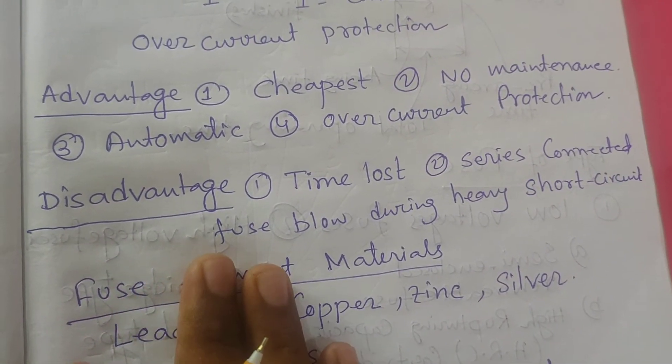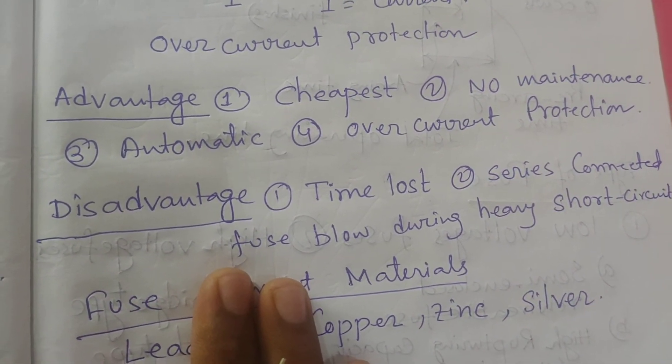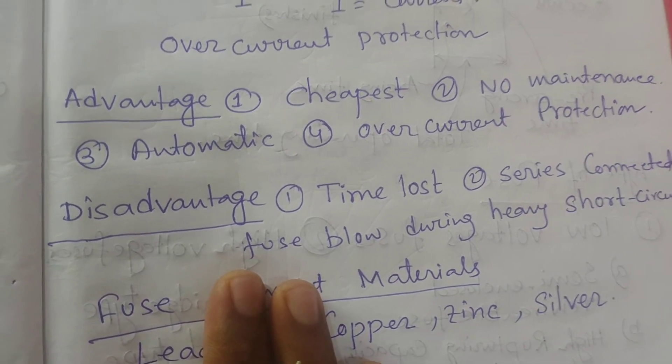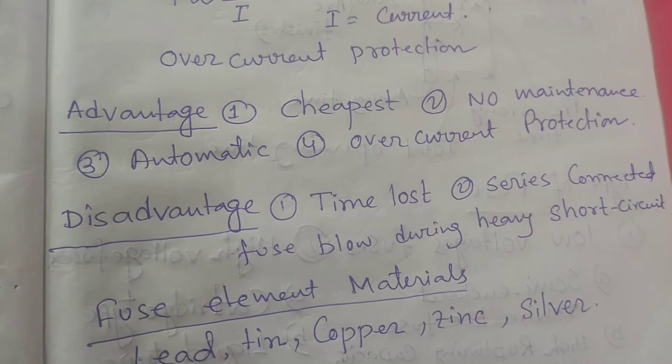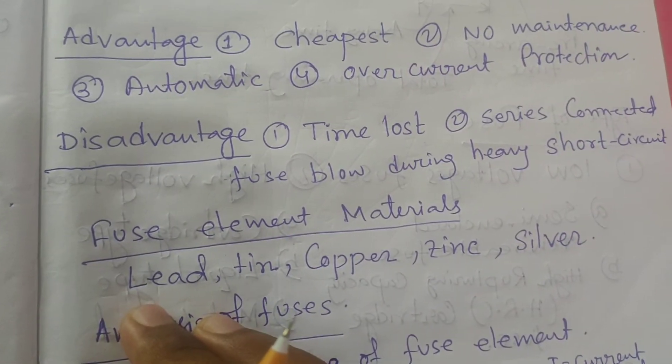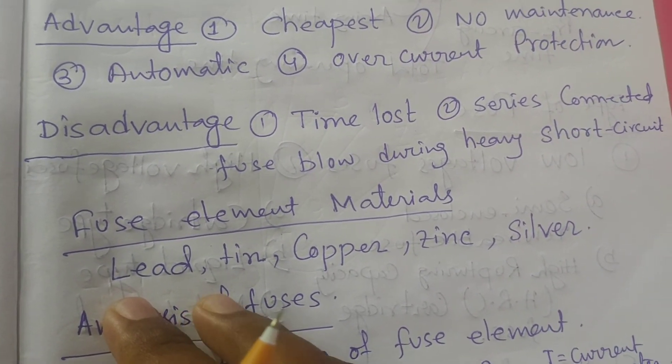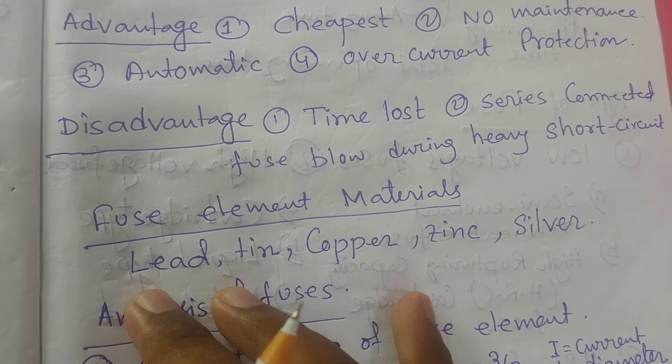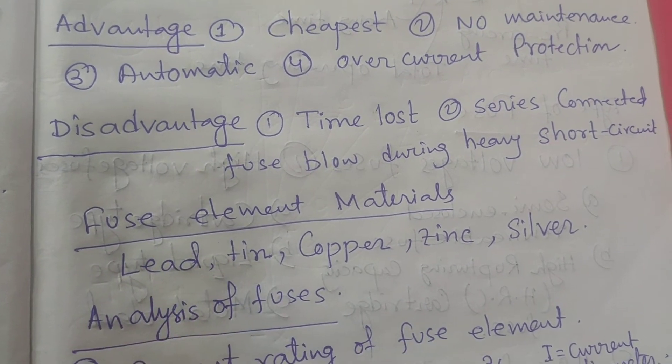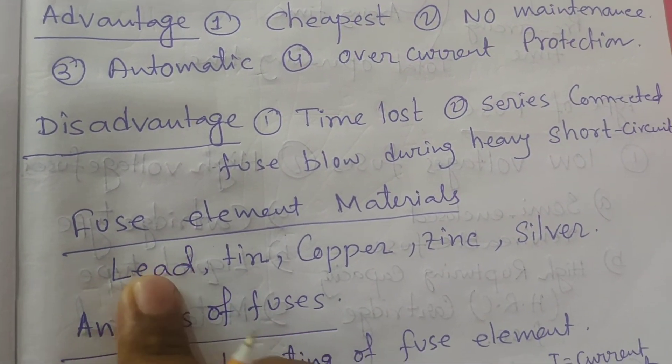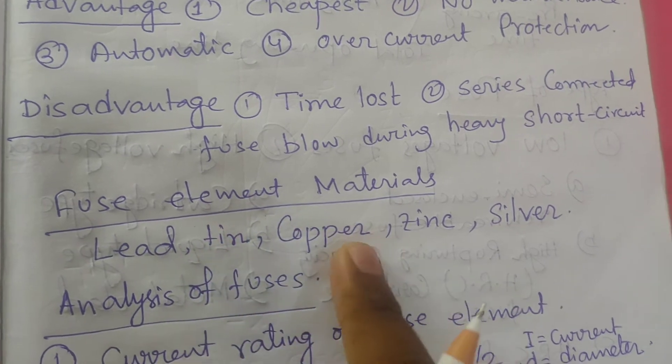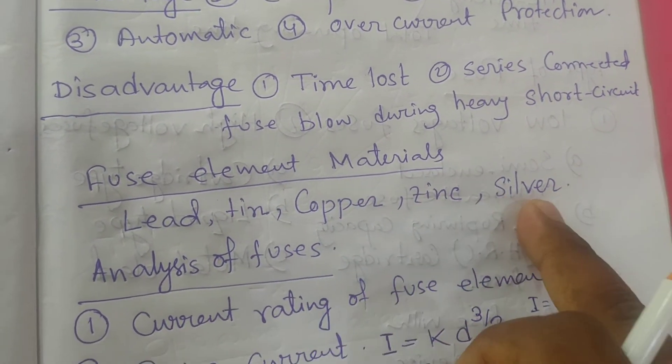The materials that have been used until now for making fuses are lead, tin, copper, zinc, and silver.